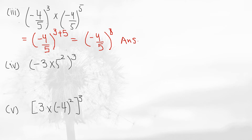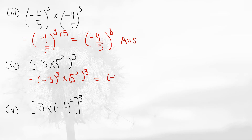Question number 4 applies the law of power of a product. There are two numbers multiplied inside the bracket with an outer power. You distribute the outer power to each factor. For example, (-3 × 5)^2: apply the power to each, giving (-3) to the power 2×3 and 5 to the power 2×3. The powers multiply, so 2 times 3 is 6, giving (-3) to the power 6 and 5 to the power 6. Similarly for the next question: (3 × (-4))^3 gives 3 to the power 6 and (-4) to the power 6.